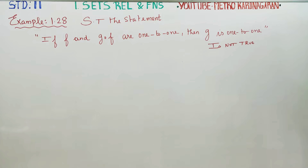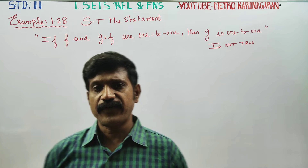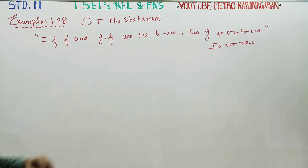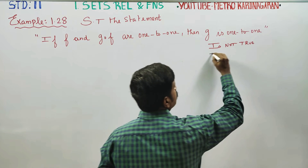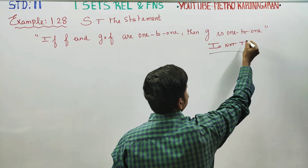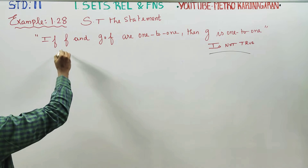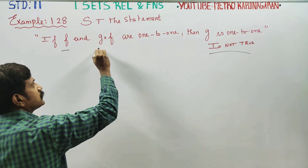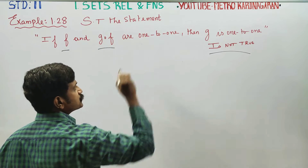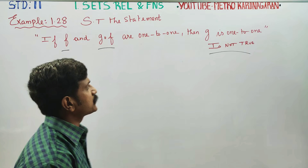Dear students, in example 1.28, show that the statement: if f and g∘f are 1-to-1, then g is 1-to-1, is not true. We will show that g∘f being 1-to-1 and f being 1-to-1 does not imply g is 1-to-1. I will prove it.